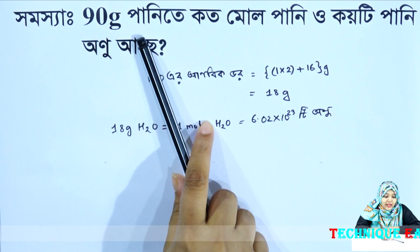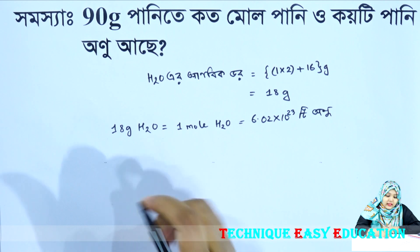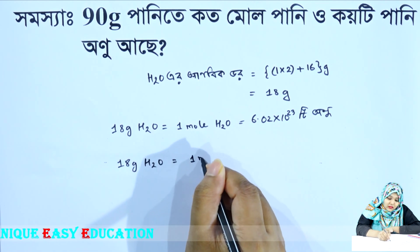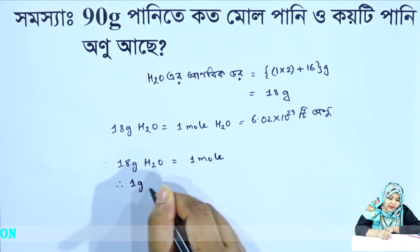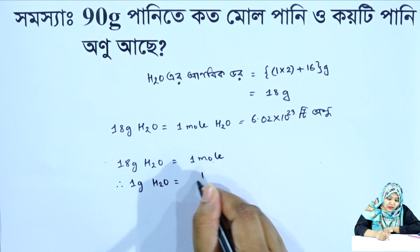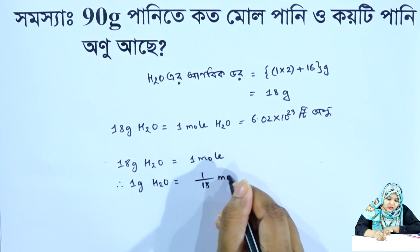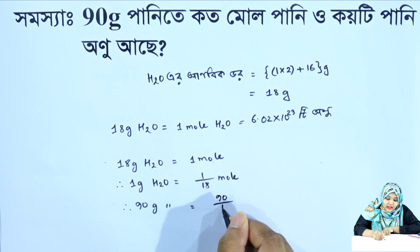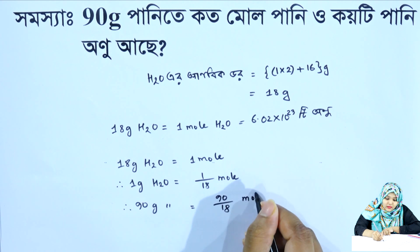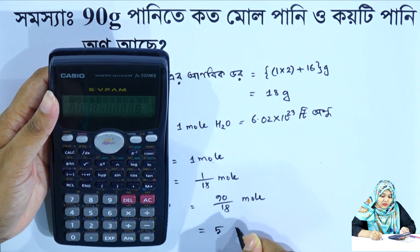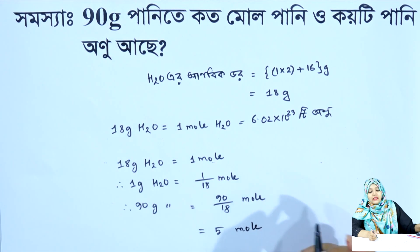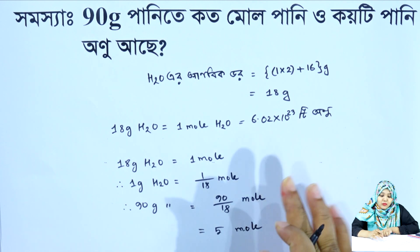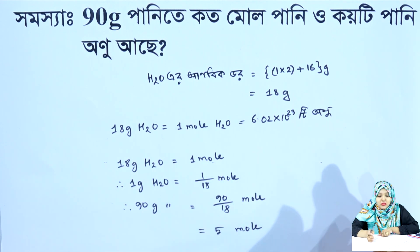The first part: 90 gram of water is equal to 90 by 18 mole, which equals 5 mole of water, and 5 mole is equal to 6.02 into 10 power 23 molecules.